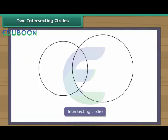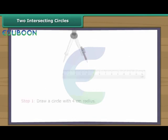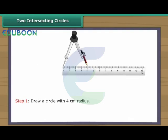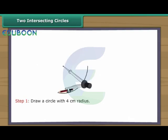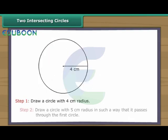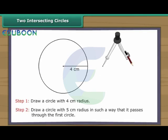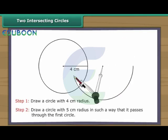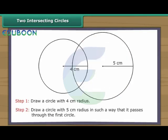Two intersecting circles. Intersecting circles may or may not have the same radii. Let us now draw intersecting circles. Draw a circle with four centimetres radius. Draw a circle with five centimetres radius in such a way that it passes through the first circle. We have two intersecting circles.